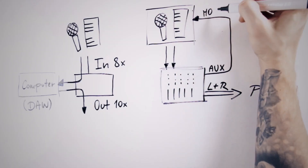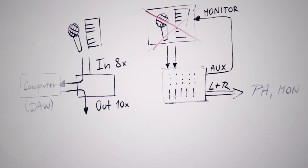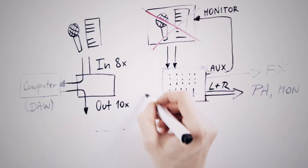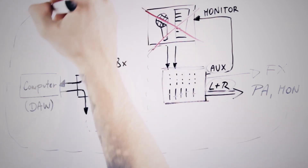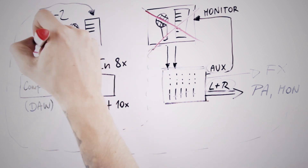That's why we use the auxiliary outputs from the mixer to send musicians back their own signal — it's called monitoring. If you're using a mixer in a studio or control room situation and you've got pre-recorded instruments, you don't need to send monitor signals back to the musicians because they're not there. So you can use the auxiliaries to put effects on your channels, and this is exactly our situation.